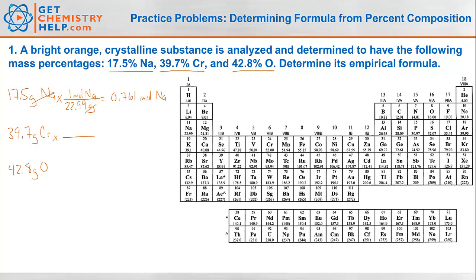Chromium has a molar mass of 52.00 grams per mole. Dividing 39.7 grams by 52.00 gives me 0.763 moles of chromium. Oxygen has a molar mass of 16.00 grams per mole. Dividing 42.8 grams by 16.00 gives me 2.68 moles of oxygen.